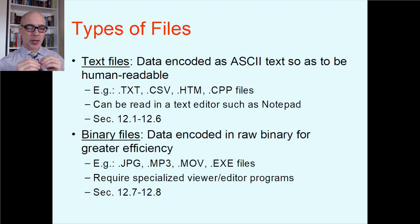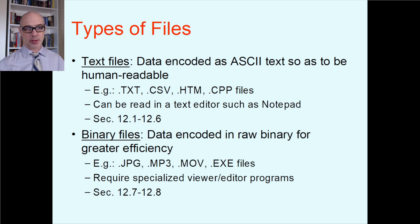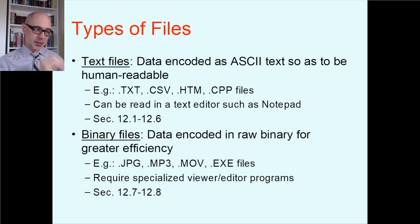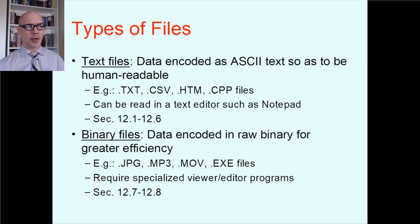For any binary file, you need a specialized viewer specific to that format. For image files like .jpg, .gif, .bmp, or .png, you need an image viewer that knows how to deal with those particular formats. For a movie file, you need a movie viewer that knows about that format. There are also programs called hex editors that will load up any type of file and just show you the individual bytes — programmers sometimes use those. That's more or less the second half of Chapter 12, Sections 12.7 and 12.8.